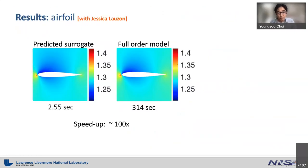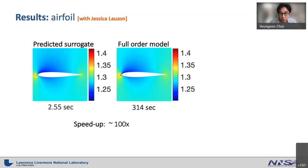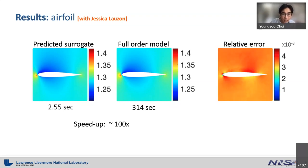We applied this linear multistep neural network black box approach to steady flow around an airfoil. We change the Mach number to generate simulation data, compress with SVD, and train the network. The predicted solution by the surrogate model and the full-order model are identical in eyeball norm, while the surrogate takes only 2.55 seconds versus 314 seconds for the full-order model — a speedup greater than 100 times. Quantitatively, the relative error is less than 1% everywhere. Pretty good.